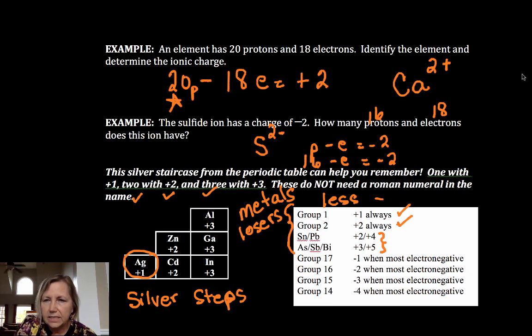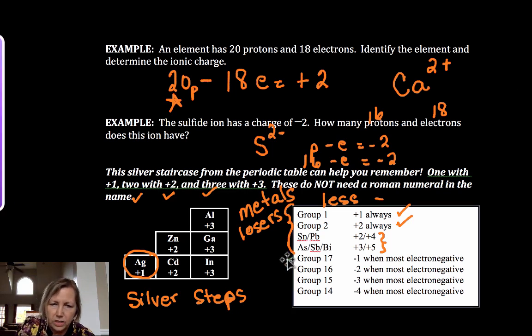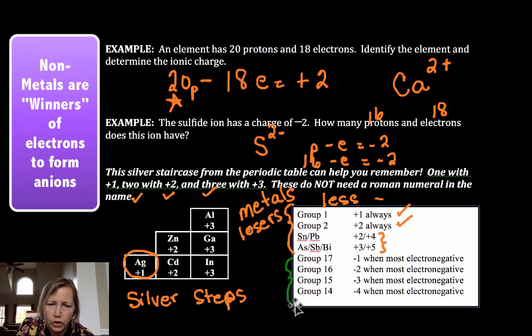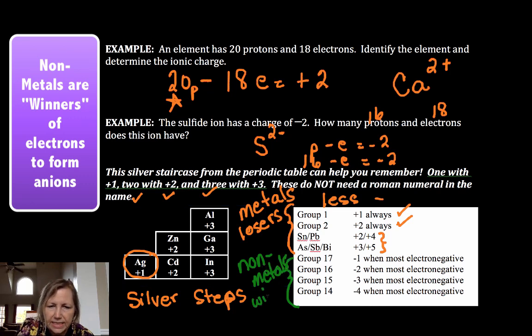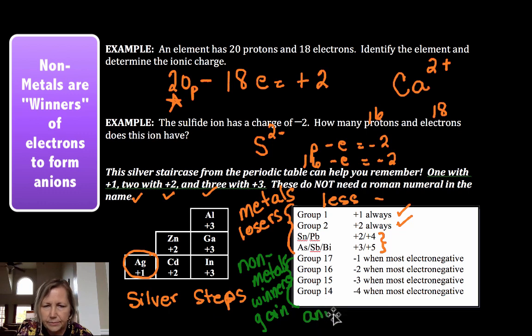Now anions are the little triangle in the upper right hand corner. And non-metals, those are your non-metals, and they are winners in the electron game. And they gain electrons to become anions. Group 18 does nothing because those are the noble gases and they're fairly non-reactive.